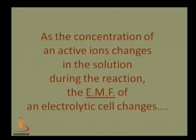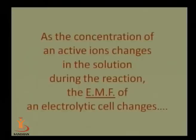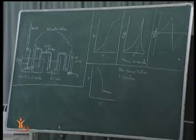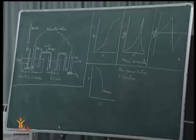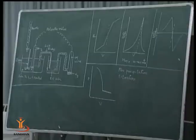As the concentration of the active ion changes in solution during the reaction, the EMF of the electrolytic cell changes. As seen on the board, a potentiometer is drawn. In this setup for titrimetric analysis, there is a hydrogen electrode as the indicator electrode and a calomel electrode as the reference electrode. Both electrodes are connected to the potentiometer via a salt bridge, with hydrogen ion electrode using active platinum at one end and a wire connected to the potentiometer at the other end. A stirrer is also present in the beaker.